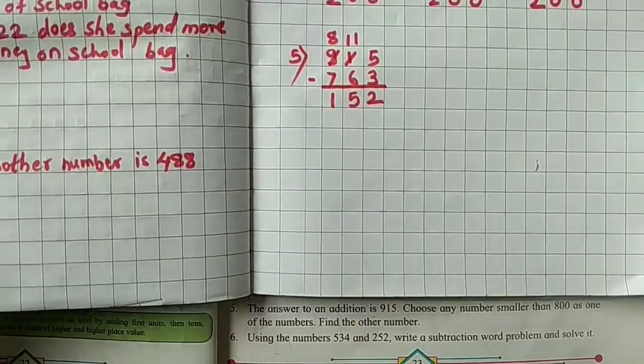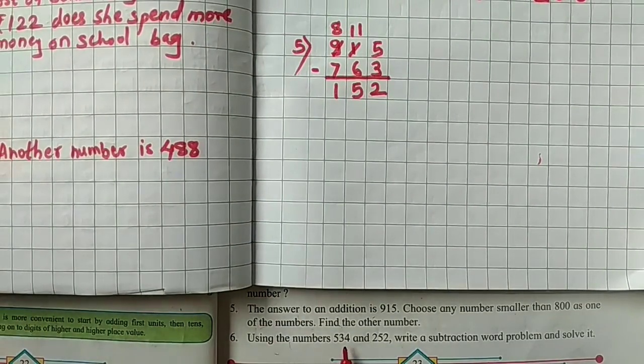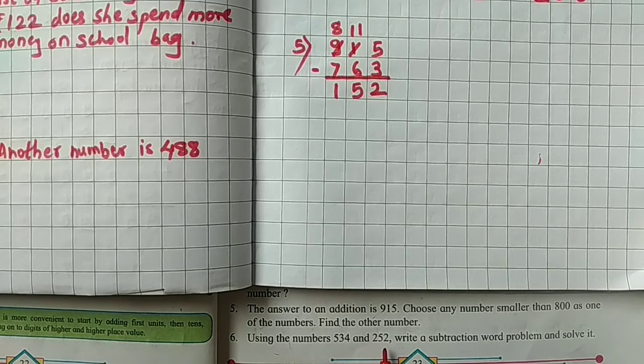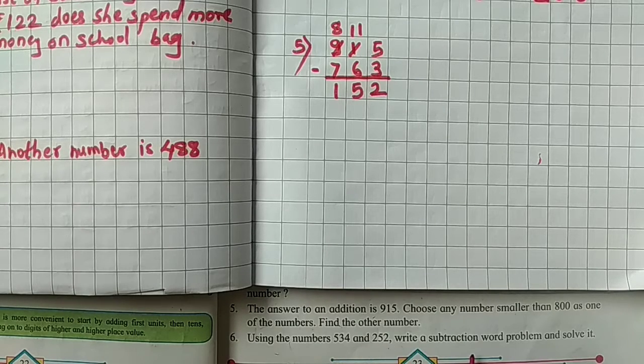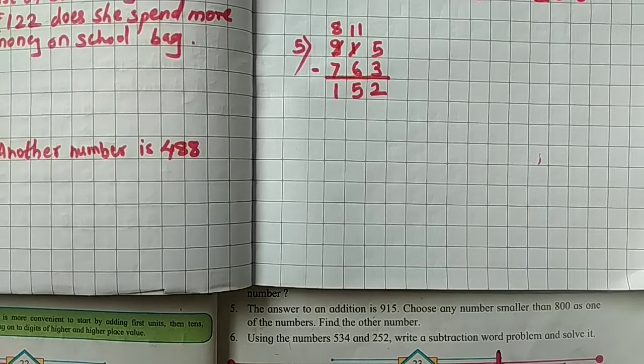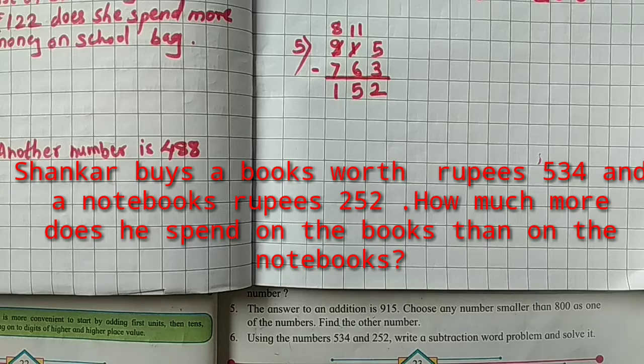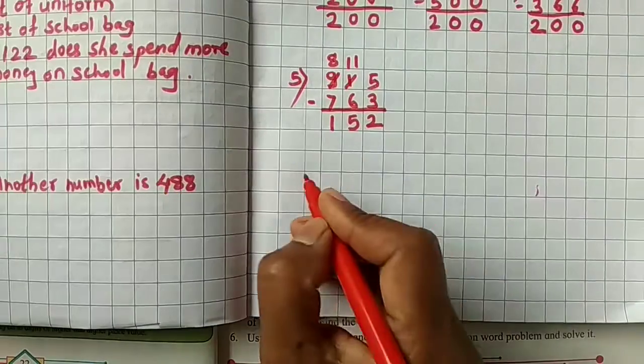Now we are solving last. Using the number 534 and 252, write a subtraction word problem and solve it. So see on the screen, they are having one subtraction problem. Now we are doing solving.